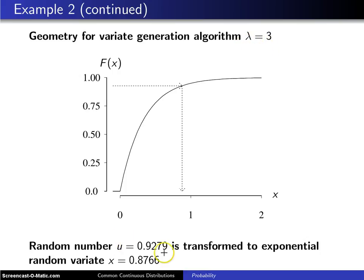And you generate a random number. Let's say in this particular case, the random number generator gives you 0.9279. The geometry is you take that 0.9279, come across to the cumulative distribution function and down. And the random variate,